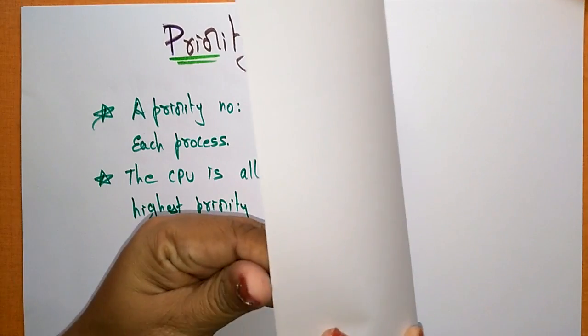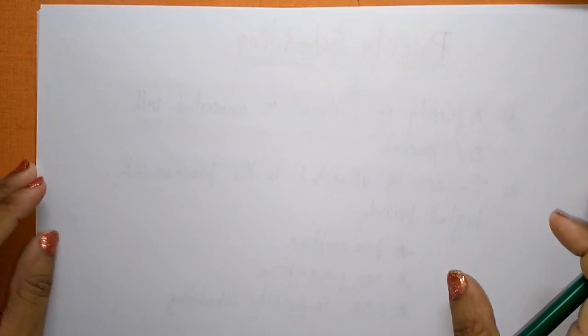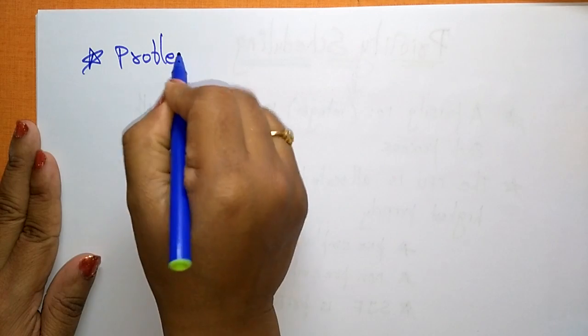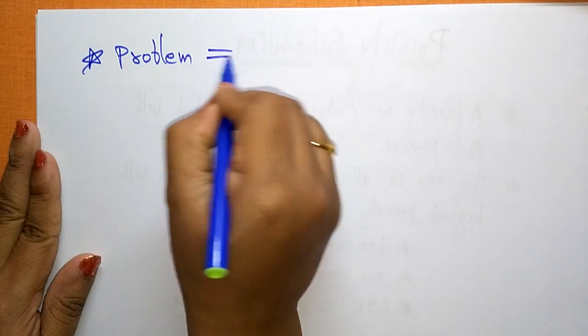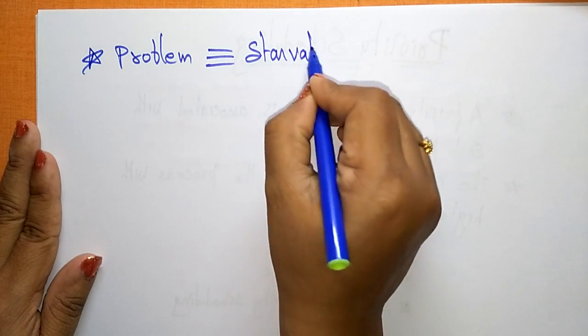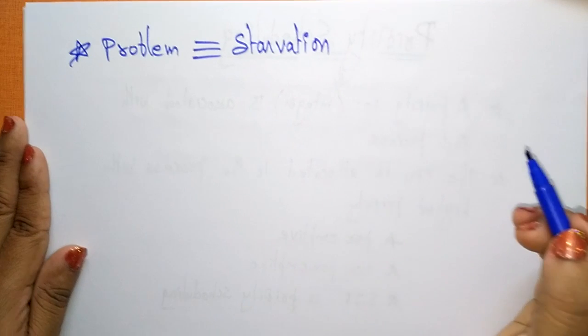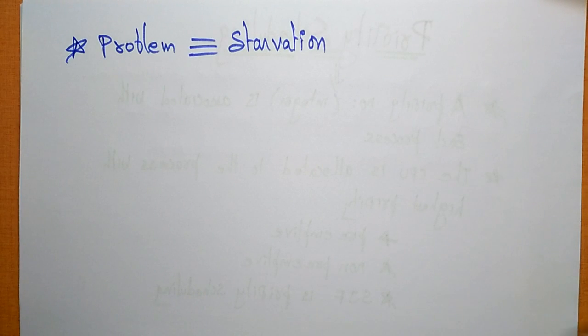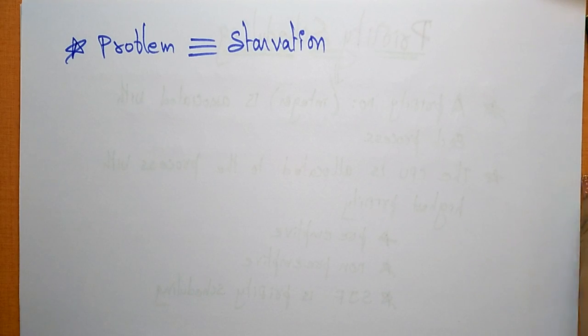In priority scheduling, you come across a major problem. The main problem that arises in priority scheduling is starvation.